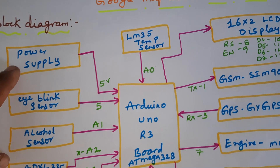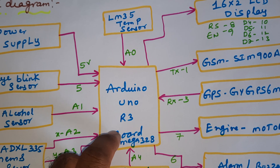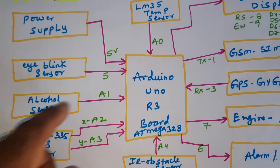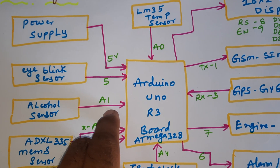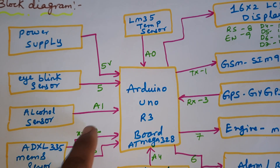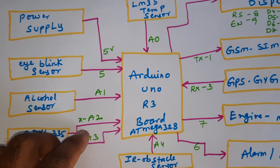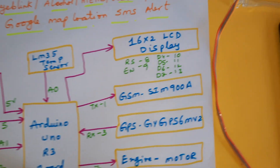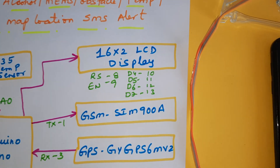We are using a 9-volt adapter converted to 5 volts pure DC output, which powers the Arduino UNO R3 (ATmega328) controller board. The eye blink sensor is connected to pin 5, alcohol sensor to A1, temperature sensor to A0, ADXL335 accelerometer to A2 and A3, obstacle sensor to A4, and a 16x2 LCD display to RS, Enable, D4, D5, D6, D7, and GPIO pins 8 through 13.